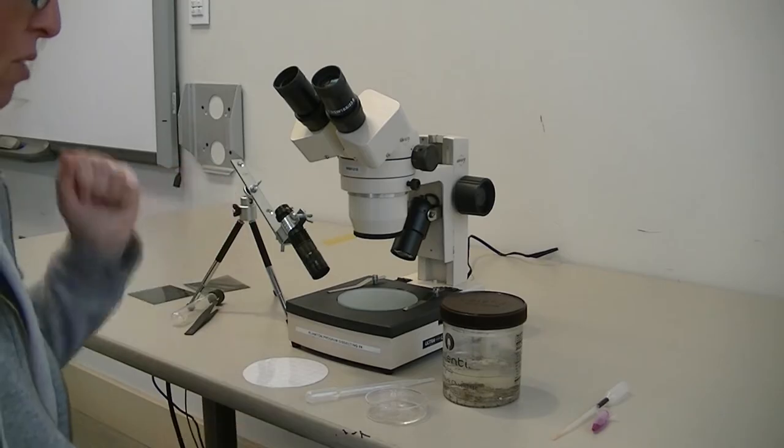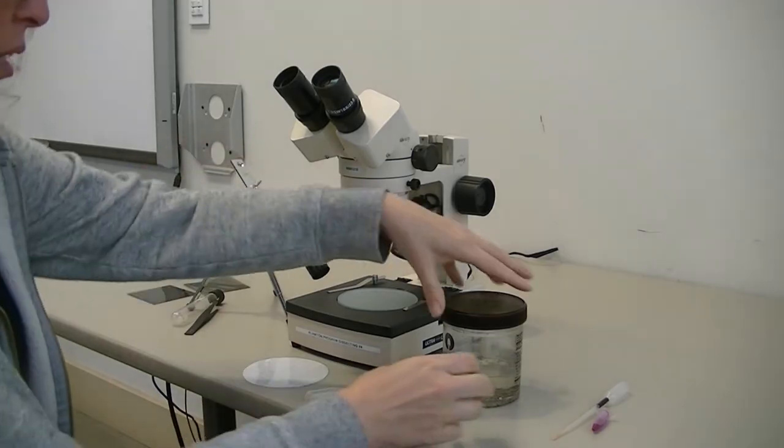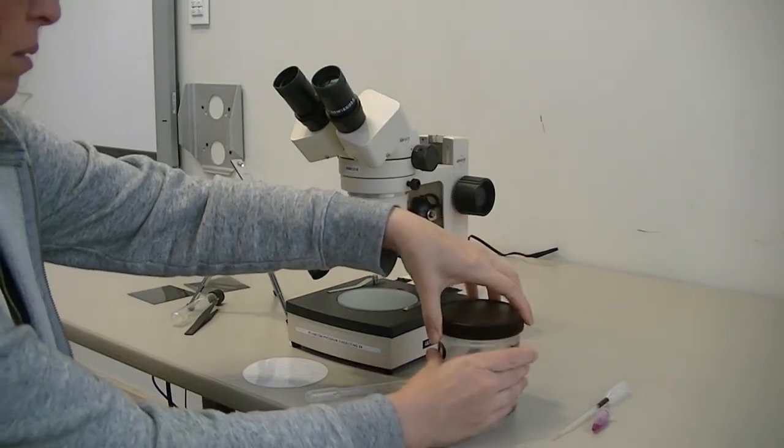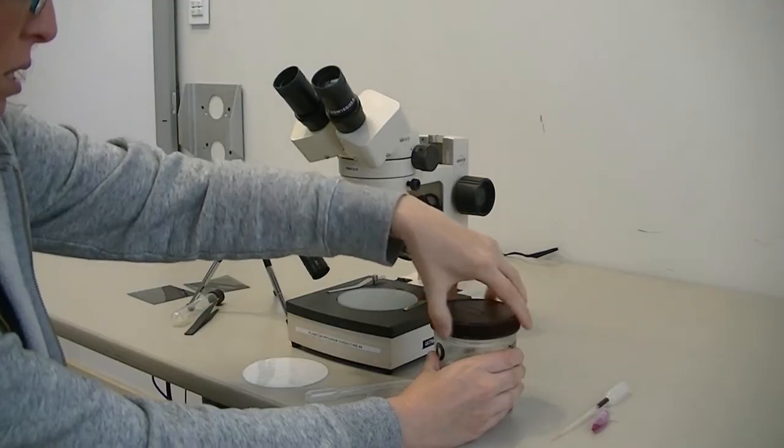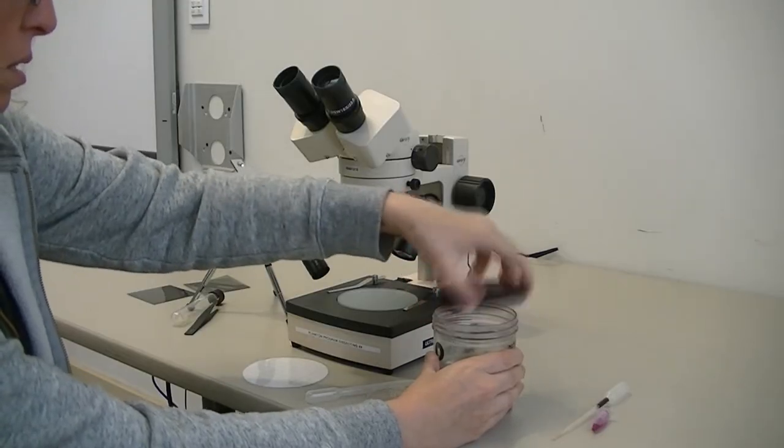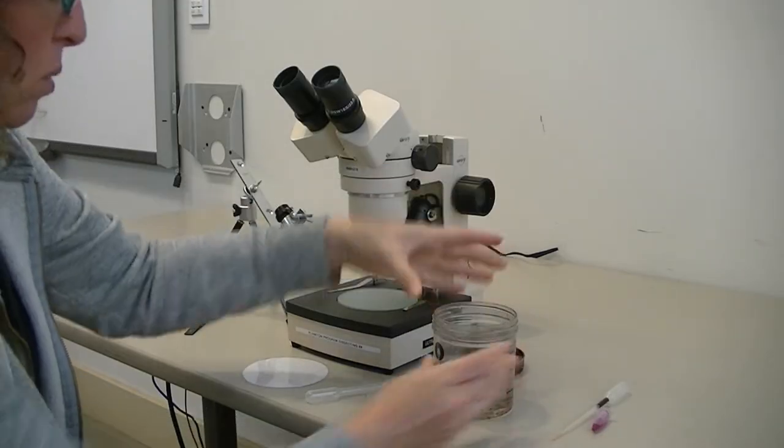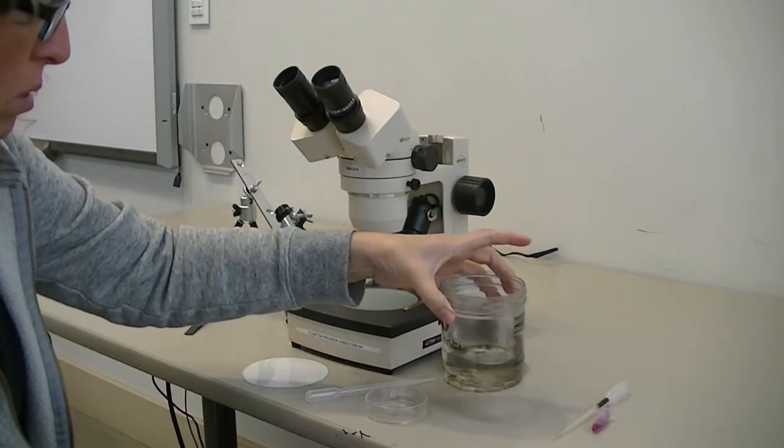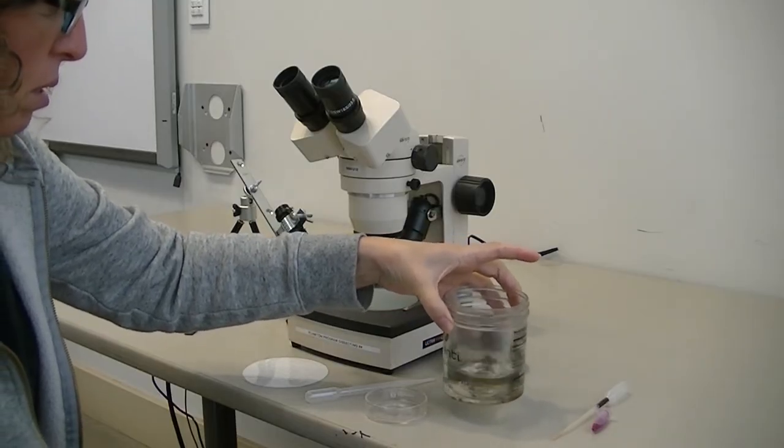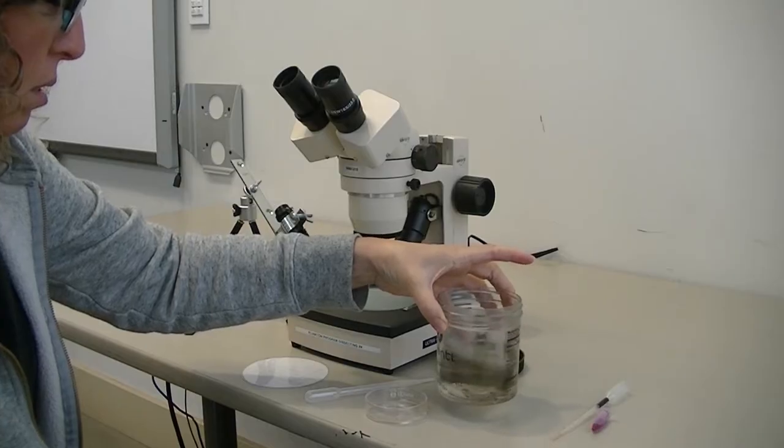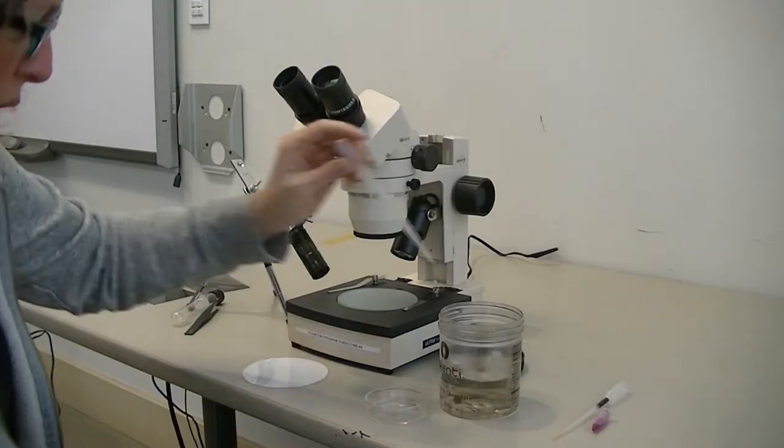The first step is to get your sample out of your jar, and you want to swirl it a little bit so that you get a good mix of plankton.